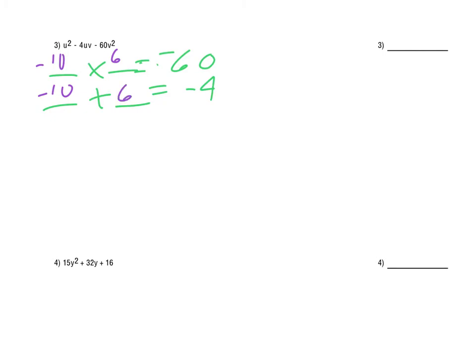What happens with the u's and v's is that we get u for each of those binomials — that's how we get the u squared, and that'll also put the u in the middle term. But the 10 and 6 are really v's — that's how we get the v squared at the end and the v in the middle term. You can always double check by either boxing or foiling out that product.